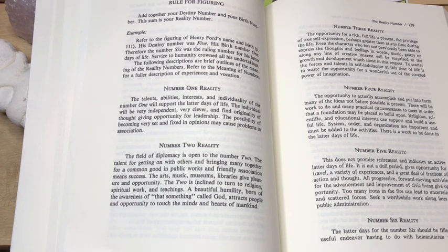If you got a one reality number, and again, this is what your ultimate goal is when you are older. The talents, abilities, interests, and individuality of the number one will support the latter days of life. The individual will be very independent, very clever and find originality of thought to giving opportunity for leadership. A number two reality, diplomacy is open to the number two, the talent for getting on with others and bringing many people together for a common good in public works and friendly association means success.